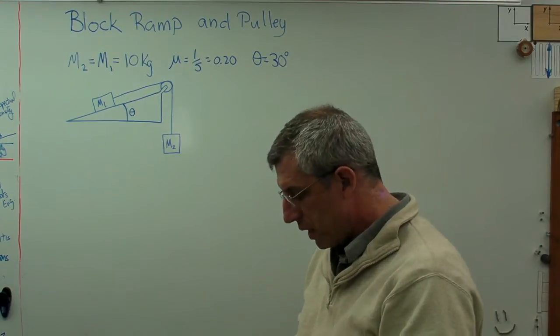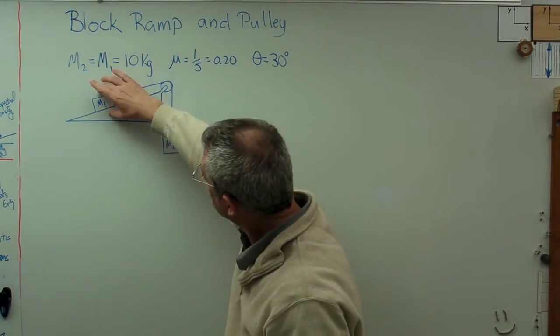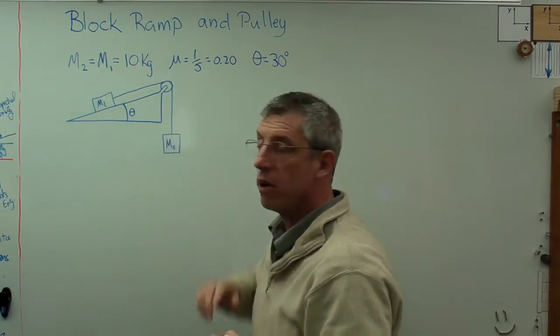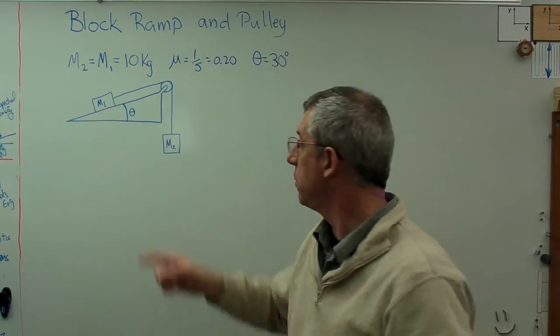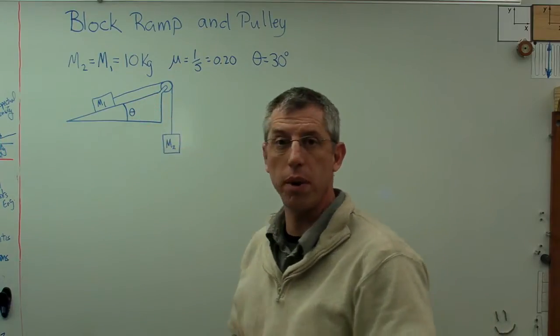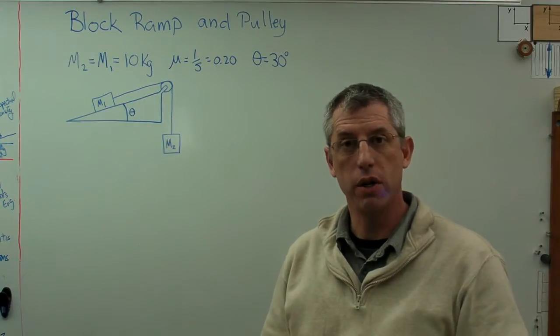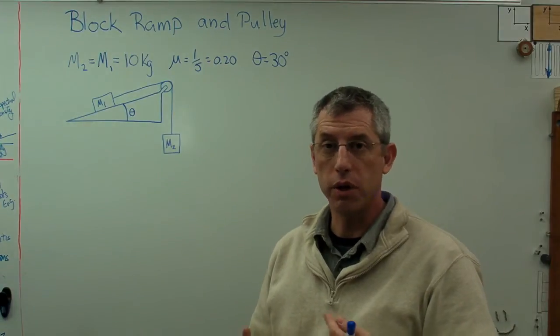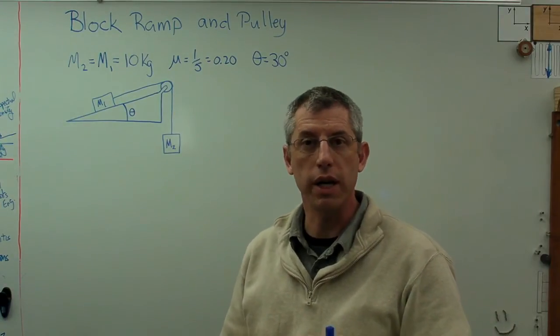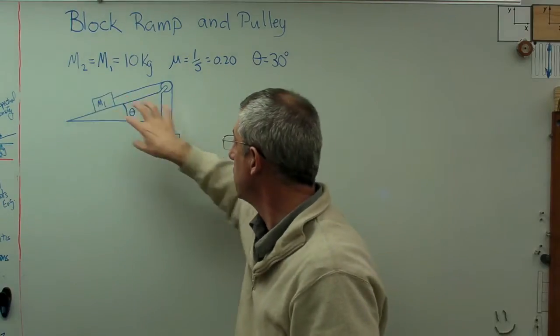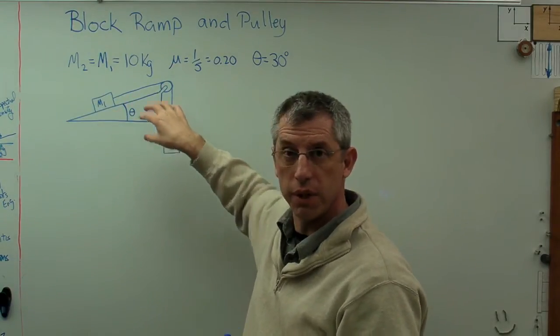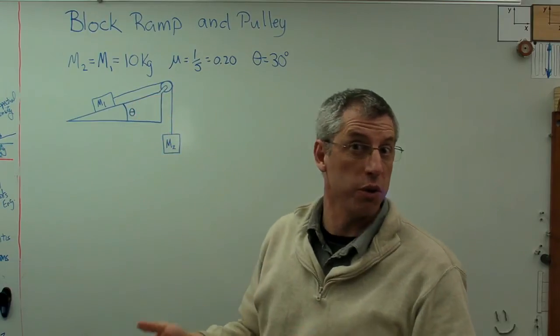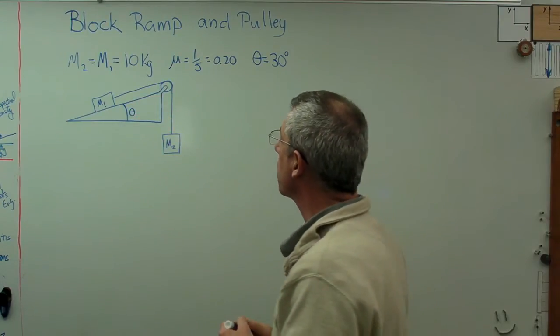The way I'm going to proceed here is I'm going to write an equation of motion for block 1 and an equation of motion for block 2. Both of them are going to have tension in them. The tension of the rope is the same everywhere. So I'm going to manipulate those two equations and get tension equals something for this one and tension equals something for that one. If both equal tension, those two somethings are equal to each other.